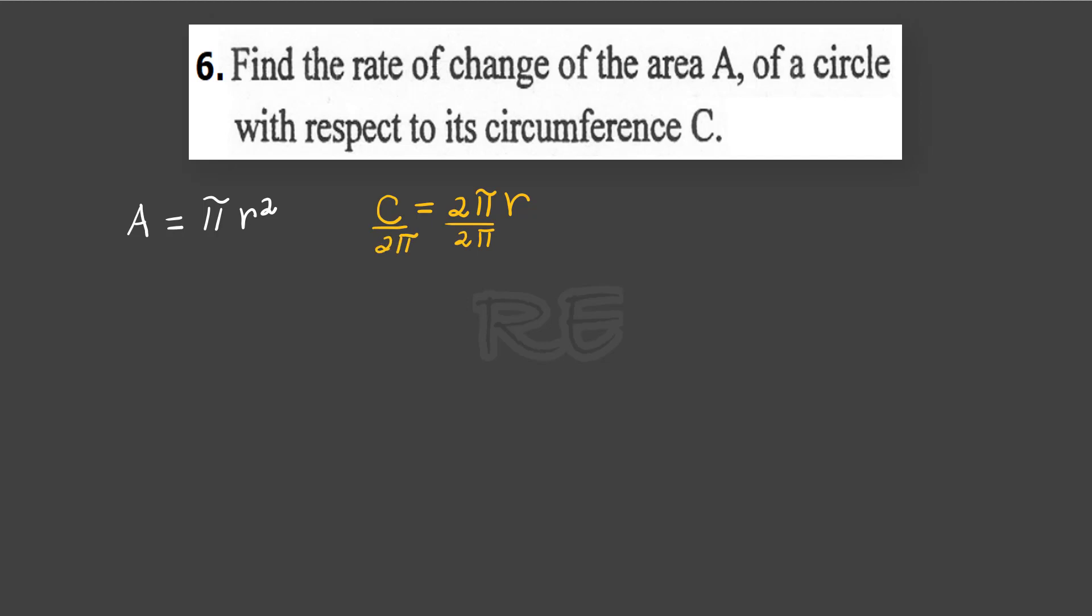If we divide by 2 pi on both sides, we will get r in terms of circumference, r is equal to C over 2 pi.